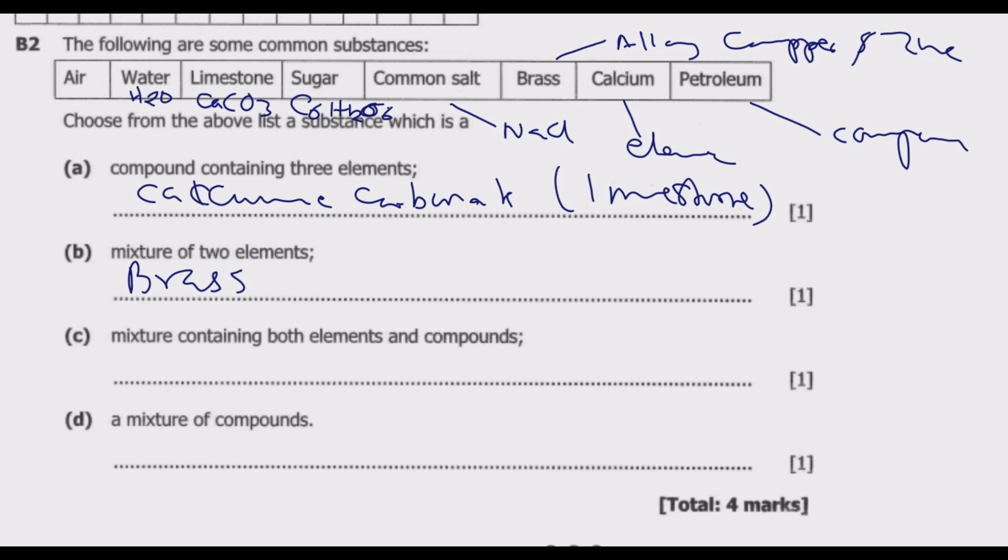We look at mixture containing both elements and compounds. This would be basically air, the compounds is carbon dioxide, then we have helium and these elements that exist as monoatomic molecules. We can also have nitrogen there.